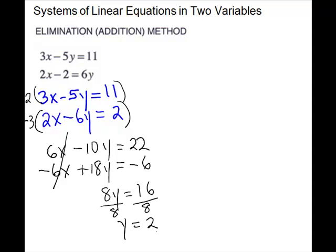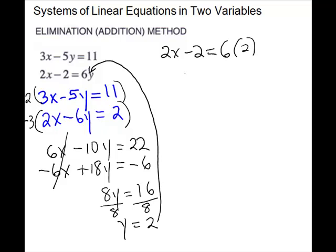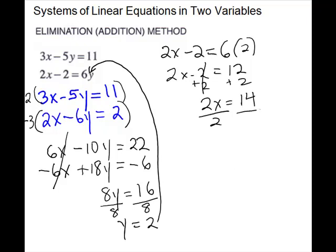We need to substitute the y back and solve for x. I'm going to plug it into the second equation. So I have 2x minus 2 equals 6 times 2. That gives 2x minus 2 equals 12. Add 2 to both sides, so 2x equals 14, which means x equals 7. So my solution to the system is the ordered pair 7, 2.